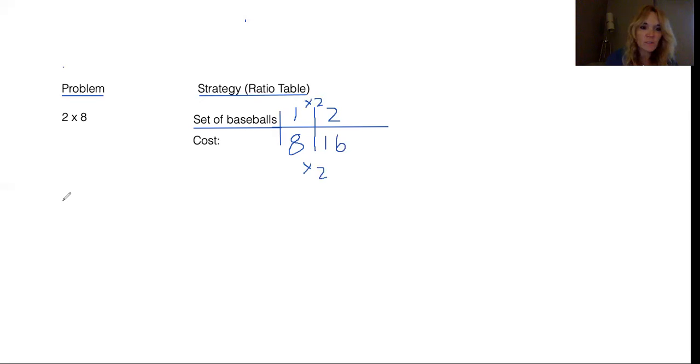So if our next problem is four times eight, we would set it up the same way. So we have the same ratio table. Let's go ahead and write that in your notebooks while I'm doing it as well. So I have one baseball is $8. Two baseballs would be $16.